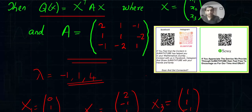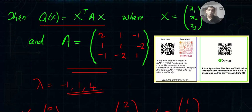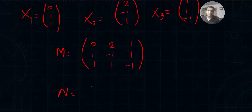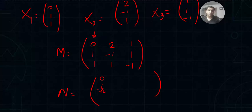The matrix corresponding to a quadratic form is always symmetric — reading across rows or down columns gives the same values. Since A is symmetric, we need the normal matrix N, obtained by normalizing the eigenvectors. N = [[0/√2, 2/√6, 1/√3], [1/√2, −1/√6, 1/√3], [1/√2, 1/√6, −1/√3]].